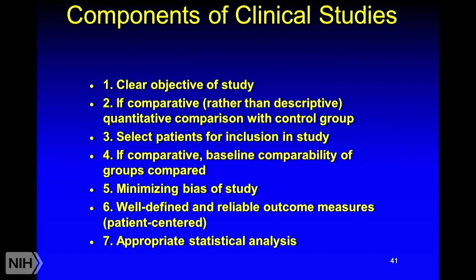We need to talk about the basic components of a clinical research study. First, you have to have a clear objective. If it's a comparative or analytical study, you need a quantitative comparison between the test group and the control group — though that doesn't apply to purely descriptive studies. You need to select patients for inclusion, and if it's a comparative study, ensure baseline comparability between the test and control groups. That applies when testing interventions; if you're looking at risk factors for an outcome, baseline differences are in fact what you're trying to analyze.